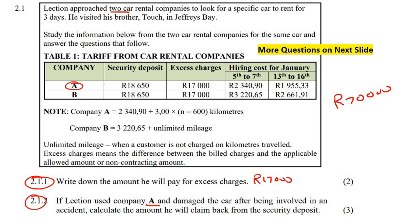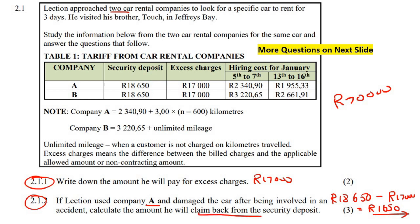If Lection uses Company A and damages the car after being involved in an accident, calculate the amount that he will claim back from the deposit. So Lection crashes the car, brings it back damaged, and says, 'Can I please have my deposit back?' They're going to say no - you damaged our car, so we are going to take 17,000 Rand away and give you whatever's left. So 18,650 minus 17,000 leaves 1,650 Rand. That is the amount he will be able to claim back from the security deposit.